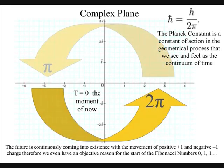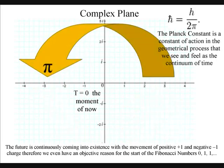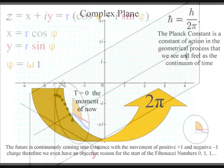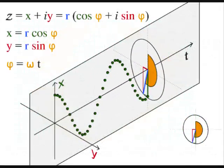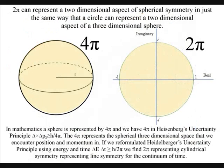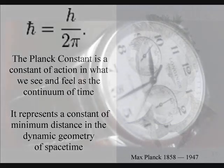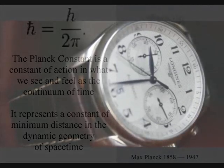In maths, 2π can represent three things. Number one, it can represent a complete rotation on the complex plane. Number two, it can represent cylindrical symmetry that has line symmetry. And number three, it can represent a two-dimensional aspect of spherical symmetry. I will explain these three different aspects of 2π within one universal process, with the Planck constant being a constant of action in the dynamic geometrical process that we see and feel as the passage of time.